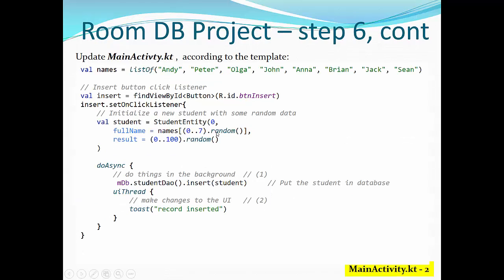A little bit about insertion. We initialize a new student with some random data. And we do an asynchronous task. We do this task in the background using doAsync block, and put the students in database. Using UI thread, we will make changes to UI. What is the most important decision to use asynchronous processes here? The question is accessing the database could be very slow and it can freeze UI. And in order to make changes to UI, you also need a separate UI thread to make sure that your changes will not cause any problem for the application itself in general.